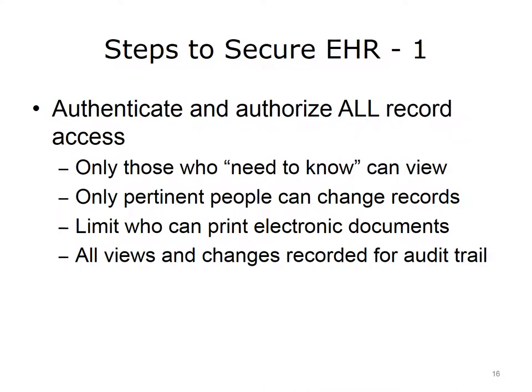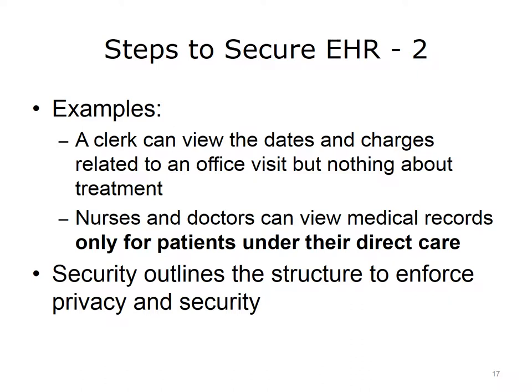What steps can be taken to secure an EHR and its records? It is possible to authenticate and authorize all access to electronic health records. Authorization involves permissions. Permissions limit who can view, change, and/or print medical records and electronic documents. Additionally, all views of and changes to medical information should be recorded for audit. As an example, a clerk would be able to view the dates and charges related to an office visit, but would not be able to view details of the treatment received or information discussed between patient and doctor. Nurses and doctors can view medical records only for patients under their direct care. An important point is that security outlines the structure through which privacy and confidentiality can be enforced. Putting in place security mechanisms such as requiring usernames and passwords, badges to open doors, and keys to open file cabinets increases the probability of data privacy and confidentiality.